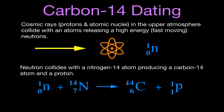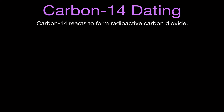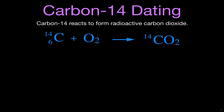For carbon-14 dating, the carbon-14 is the product we're really interested in, because it is radioactive. It will decay through beta minus decay back to nitrogen-14, and we can use that radioactivity of carbon-14 to date material. There are three naturally occurring isotopes of carbon: carbon-12 and carbon-13, which are stable, and carbon-14, which is radioactive.